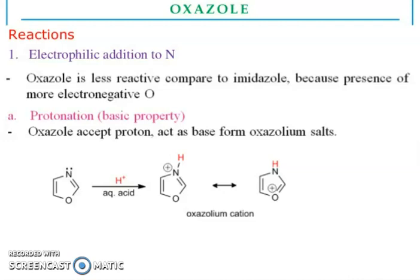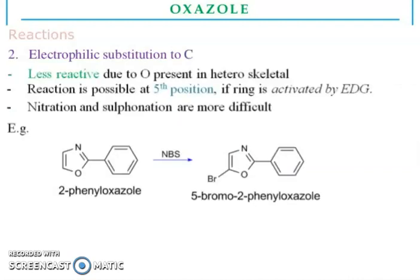Now, reactions. Electrophilic additions to nitrogen: oxazole is less reactive compared to imidazole because of the presence of more electronegative oxygen. Protonation and basic properties: oxazole accepts a proton and acts as a base to form an oxazolium salt. Electrophilic substitution to carbon is less reactive due to the oxygen present in the heterocyclic skeleton. Reaction is possible at the 5th position if the ring is activated by electron-donating groups. Nitration and sulfonation are more difficult. You can see 2-phenyloxazole giving 5-bromo-2-phenyloxazole.